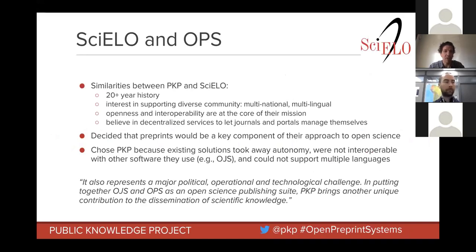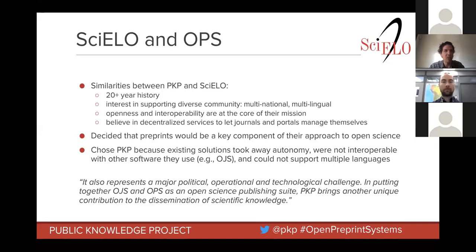These features embody PKP's ideals of what open scholarly infrastructure should look like. In some ways, because of how we envision open scholarly infrastructure and the ideals we share with Cielo, this is part of why Cielo approached PKP for building a preprint system instead of taking one of the platforms that already existed. There are a lot of similarities between what Cielo was looking for and OPS, and perhaps some of this resonates with your organizations and communities as well.